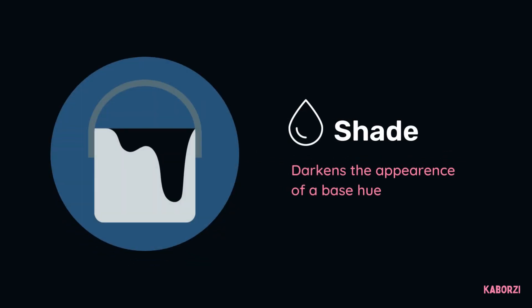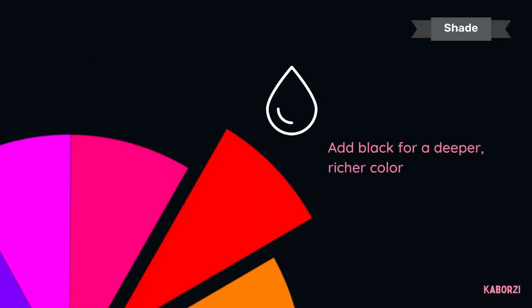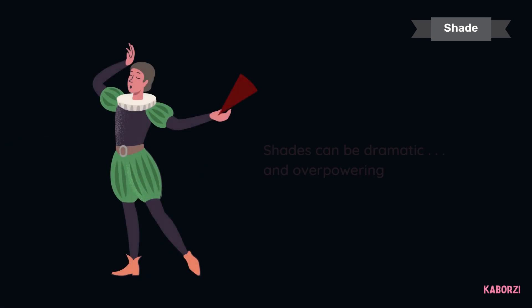Shade: the purpose of a shade is to darken the appearance of a base hue. It's created by adding black to a base hue, darkening the color. This creates a deeper, richer color. Shades can be quite dramatic and can also be overpowering.